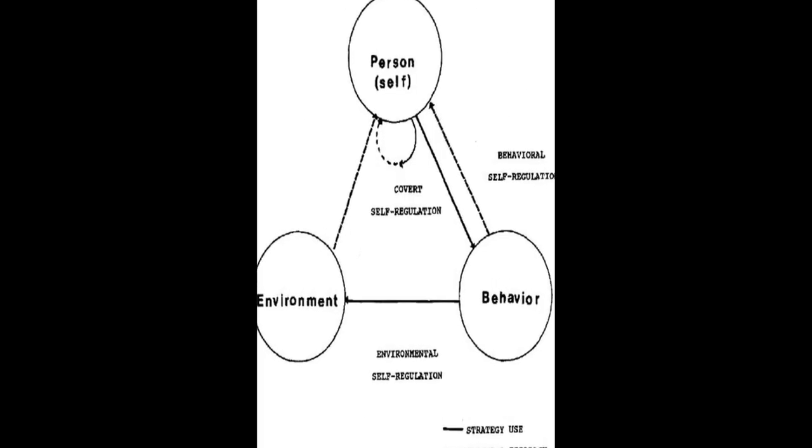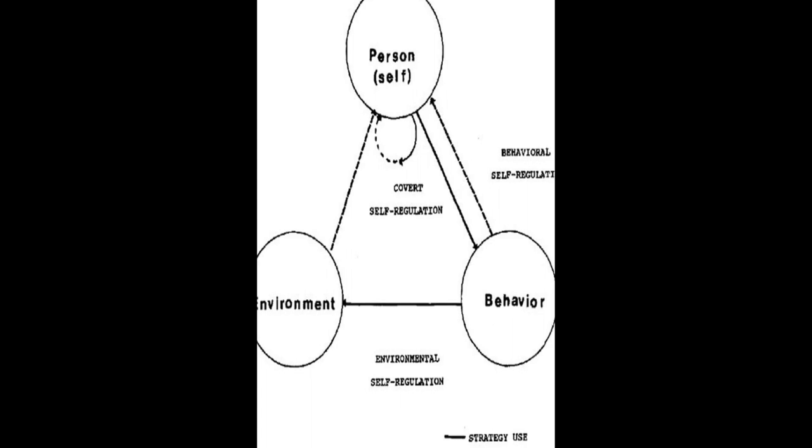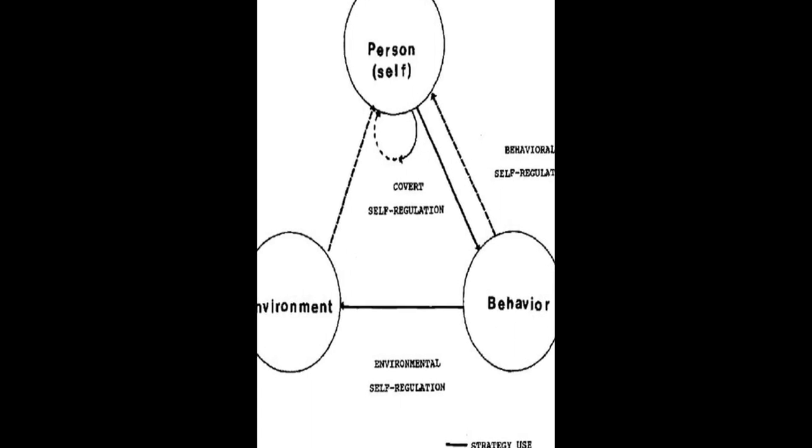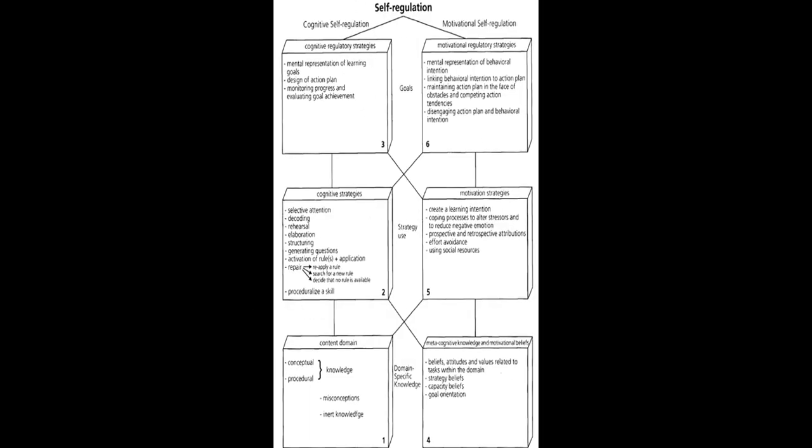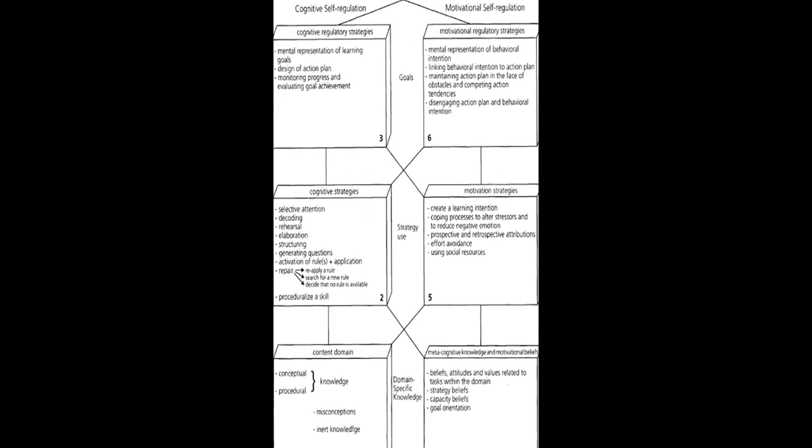The models are then compared in terms of phases and sub-processes, how they conceptualize metacognition, motivation, and emotion, top-down/bottom-up, automaticity, and context.